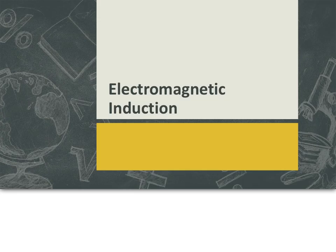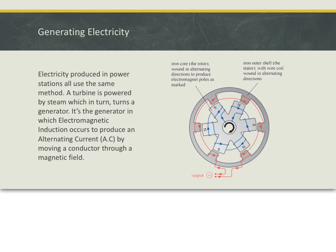Electromagnetic induction. Electricity produced in power stations all use the same method. A turbine is powered by steam, which in turn turns a generator. It's a generator in which electromagnetic induction occurs to produce an alternating current, by moving a conductor through a magnetic field.